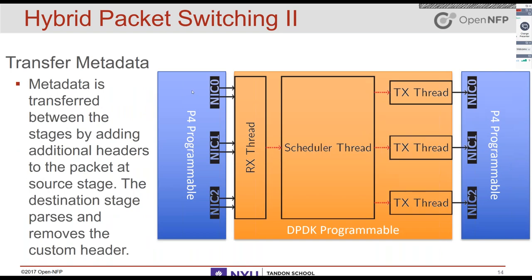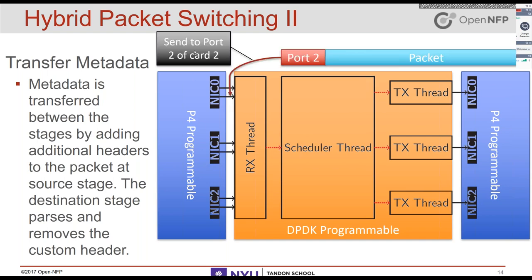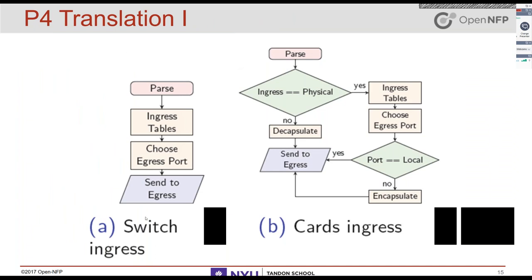We solved this by adding an additional header. For example, to send a packet from NIC0 to port two of card two, we put it on the corresponding queue - that queue corresponds to card two, so DPDK has the card routing solved. We also add a header to the packet specifying the port number. The third programmable device - the P4 block on the egress card - just reads this number and does not reprocess the packet, then sends it to the correct output.